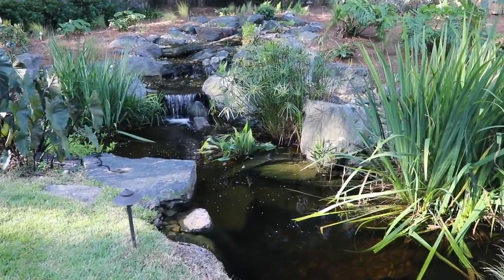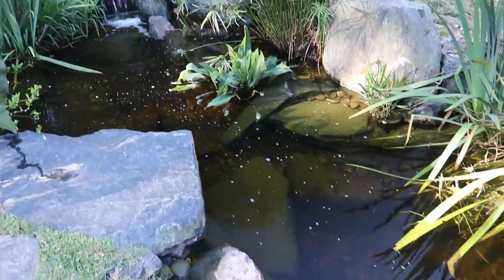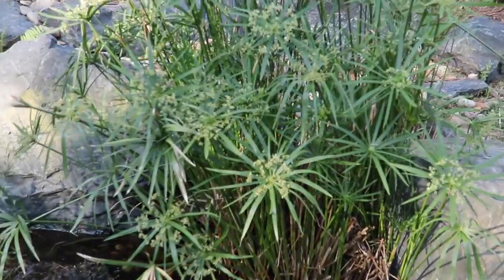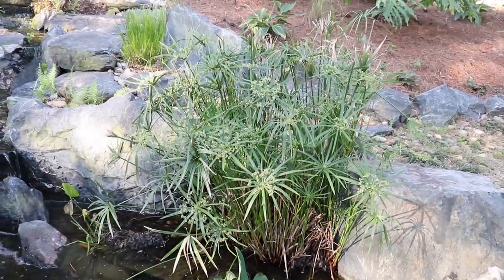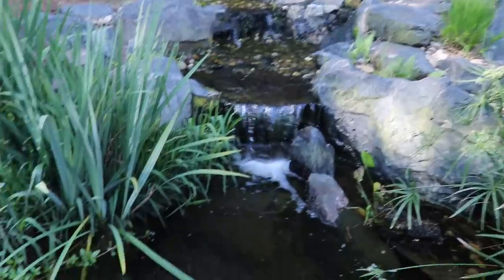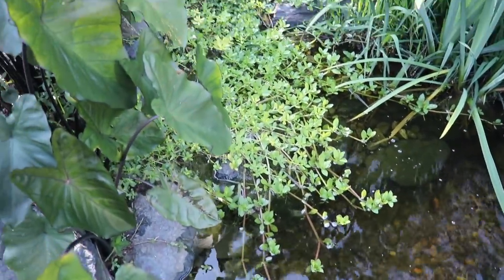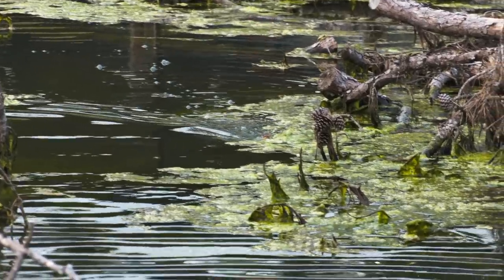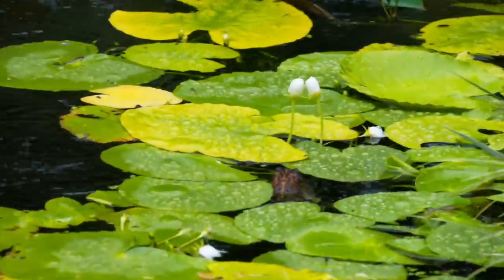One of the main focuses of today's video is vegetation. We'll take a quick look at our backyard pond to talk about the different types. There are basically three: emergent, submerged, and floating. This is an example of emergent — its roots are down in the water but the majority of the plant is above water. And then you also have floating plants like this one, or lily pads.